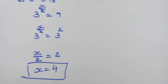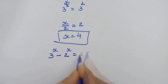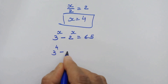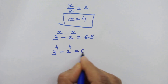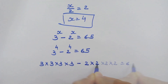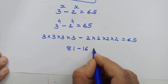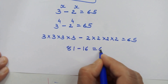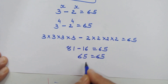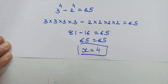Let's verify this answer: 3 raised to 4 minus 2 raised to 4 is equal to 65. So 81 minus 16 is equal to 65. 65 equals 65 — x equals 4 is the correct answer.